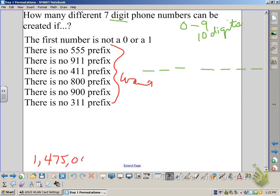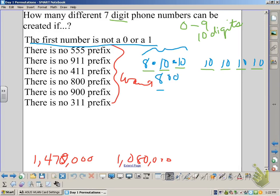We decided to figure out if 0 and 1 weren't allowed, eight numbers could go in the first blank, 10 in the rest.